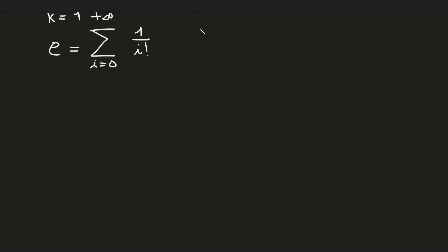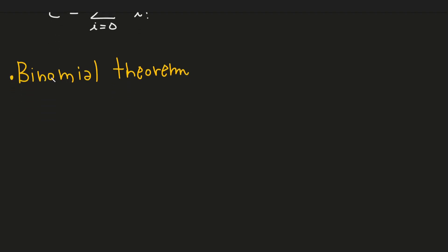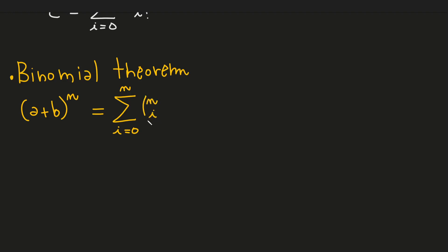We start by recalling the binomial theorem. We have a product of a plus b to the power of n — so a plus b, n times — and that equals the sum i from 0 to n of the binomial coefficient n choose i, multiplied by a to the power of i, multiplied by b to the power of n minus i.